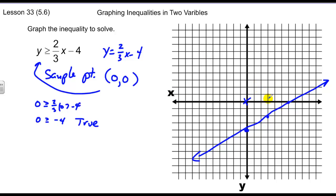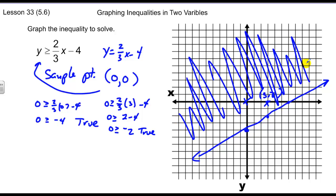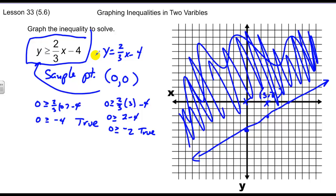I can check another point just for fun. Here's a point three, zero. Let's plug that in and see if that works as well. I get zero greater than or equal to two-thirds times three minus four, zero greater than or equal to two minus four, so zero is greater than or equal to negative two. That's a true statement as well. So here's two sample points whose values are in the solution set. So all the values in this region are in the solution set. So basically what I do is I shade this entire region. And this is the graph of the solution set of the inequality y is greater than or equal to two-thirds x minus four.